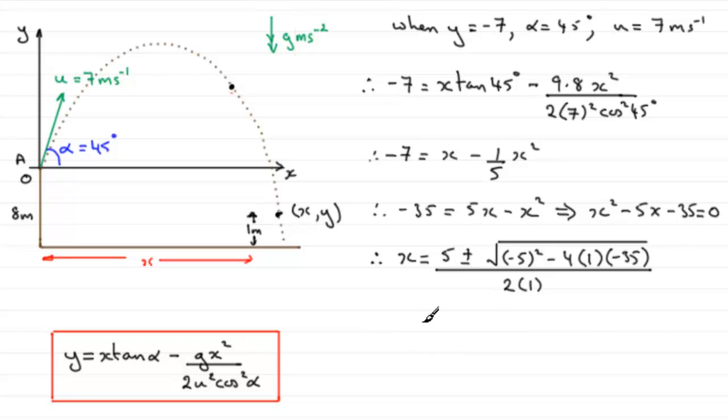Now, if you get on your calculator and work that out, you get two answers. If you take the plus value, you end up with X equaling 8.922 and so on, and if you take the negative value, you end up with X equaling minus 3.922 and so on.